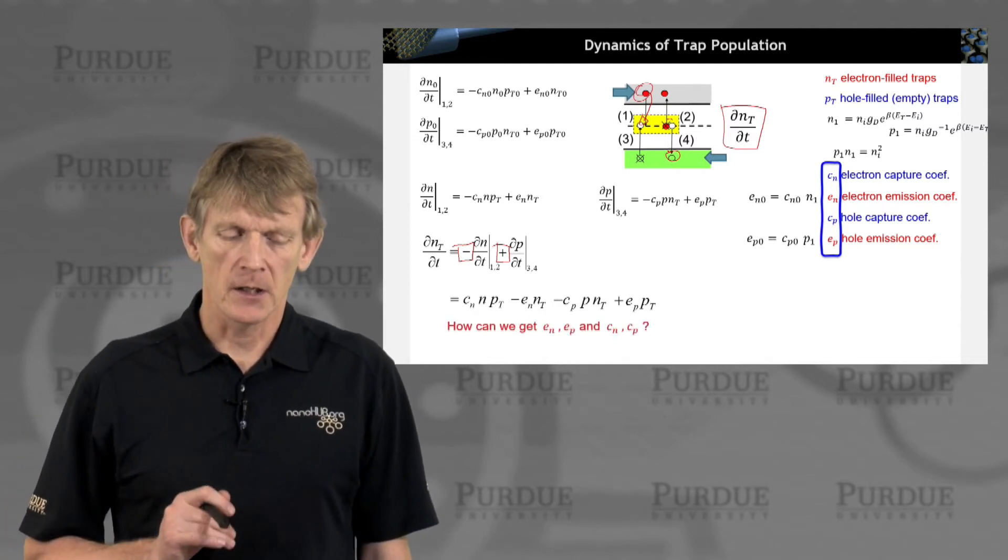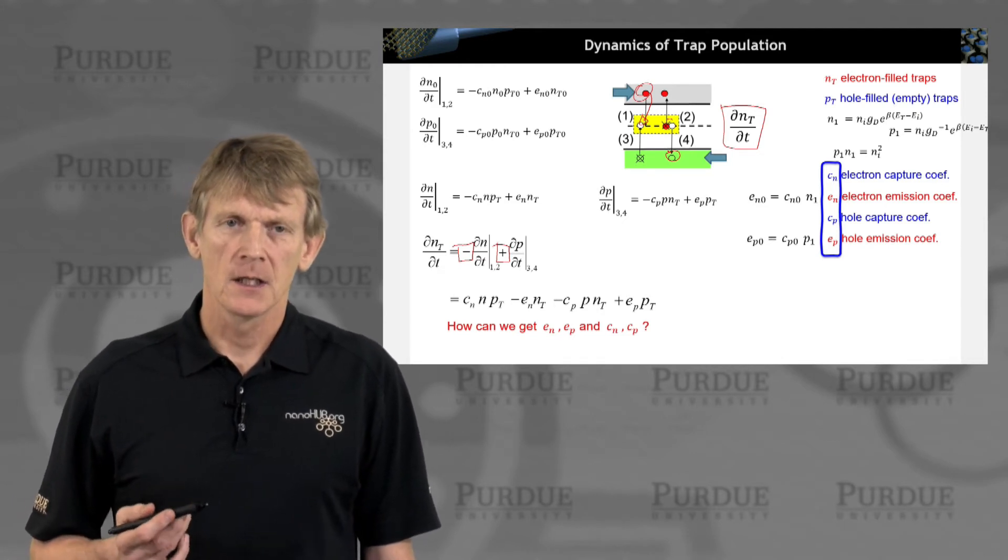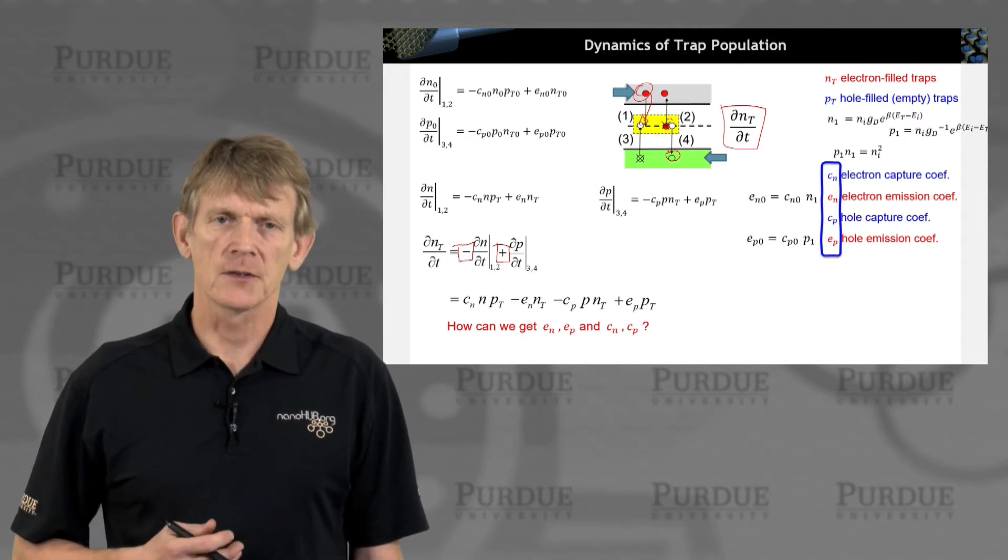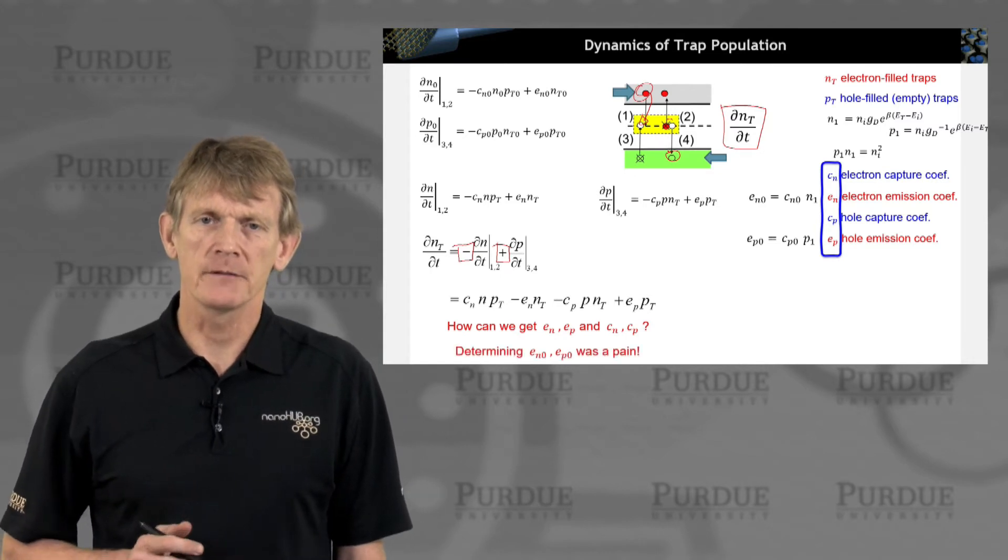Here we are. We have four elements in this rate. And the question now is, how do we get the emission and the capture rates? How do we relate these physical constants? That was somewhat of a pain in the previous section.